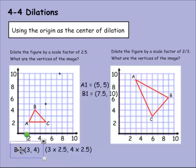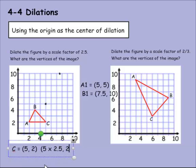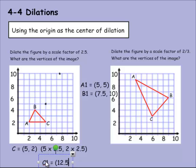I need to find C1. C equals 5 and 2. So we multiply 5 times 2.5 and 2 times 2.5. 5 times 2.5 is 12.5. C1 equals 12.5, and 2 times 2.5 is 5. This one will be difficult to plot because 12 is off the map a little bit. So I'll make a guess, which could be a little off, but that's okay for this purpose. Now we can create our triangle from A1 to B1, from B1 to C1, and C1 to A1. This is a dilation of ABC.